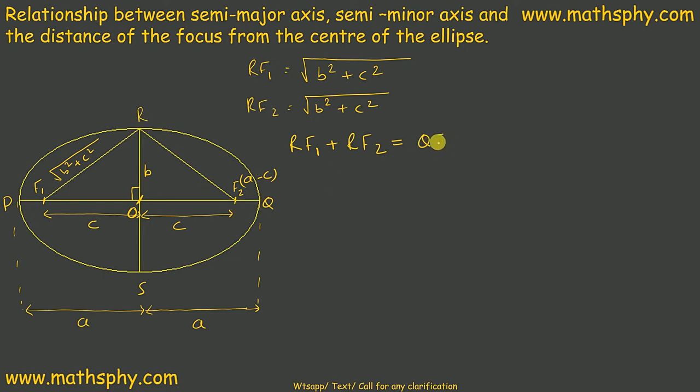QF1 plus QF2. QF1 plus OQ gives you OF1. QF2 remains as it is.